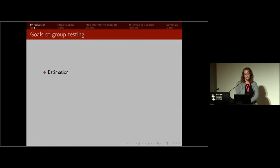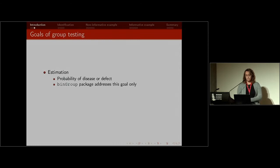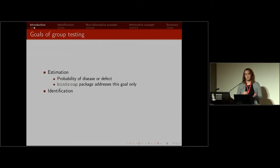So the goals of group testing are twofold. The first goal is estimation — we want to estimate the probability of a particular disease or defect. Up to this point, the bin group package had only addressed this goal. Another very important goal is identification: not only do we want to estimate the probability of disease, we want to determine which individuals are positive.